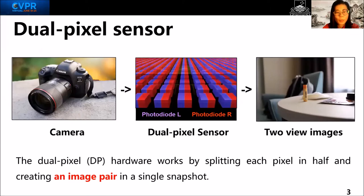The DP hardware works by splitting each pixel in half and creating an innate pair in a single snapshot. Canon designed this technique to aid autofocusing.